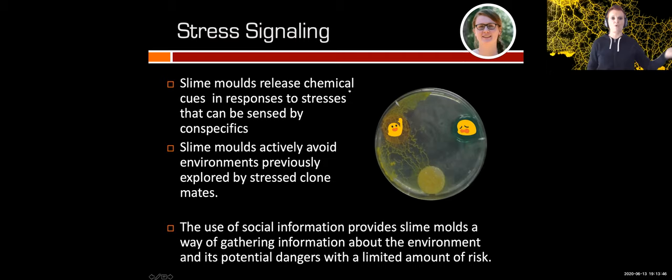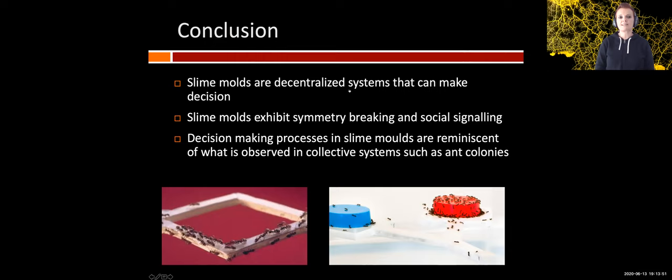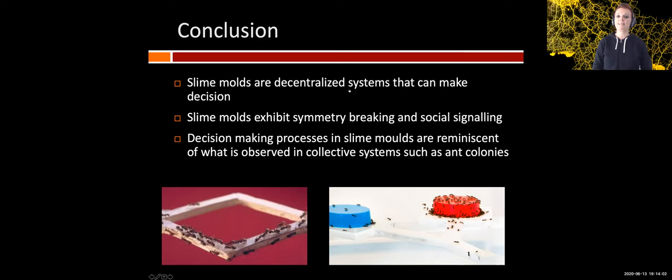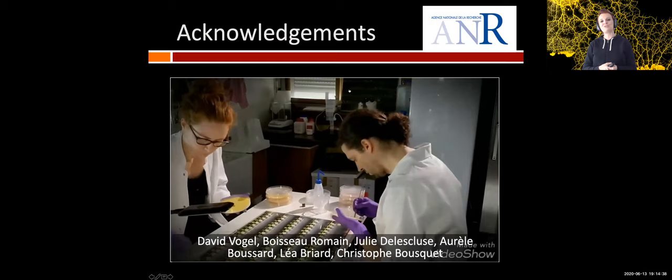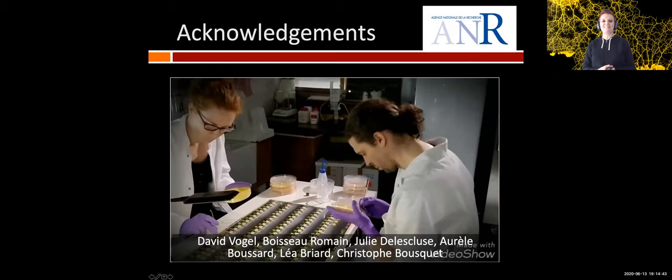To conclude, we've demonstrated that slime molds are decentralized systems that can make decisions, and like many collective systems, slime molds exhibit symmetry breaking and social signaling — even a primitive organism like slime mold can do that. The decision-making processes in slime molds are reminiscent of what is observed in collective systems such as ant colonies, which when facing two equal food sources always focus activity on a single source and use social signaling via pheromones to direct congenials to food. Thank you for your attention, and I want to thank all my students and postdocs who have been working very hard in the lab repeating all these experiments — it's really time consuming and I really thank them.